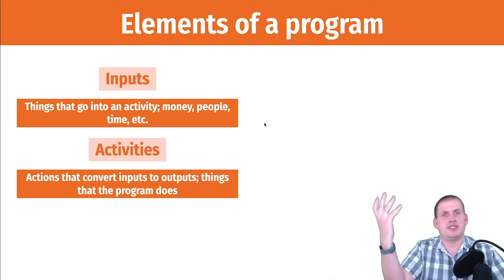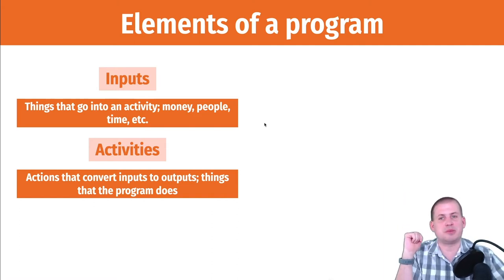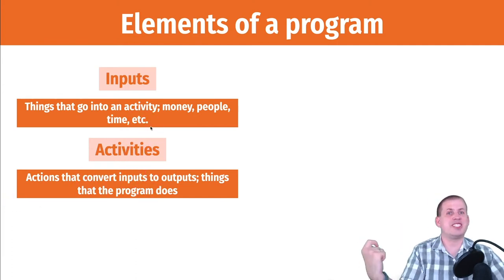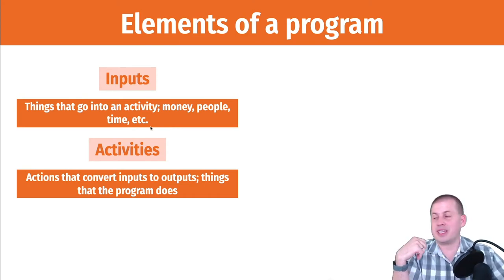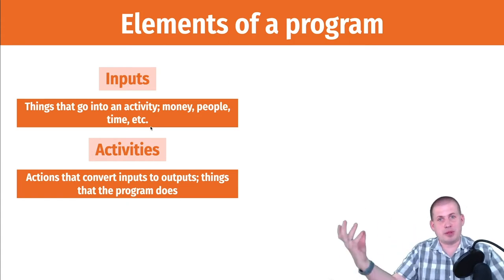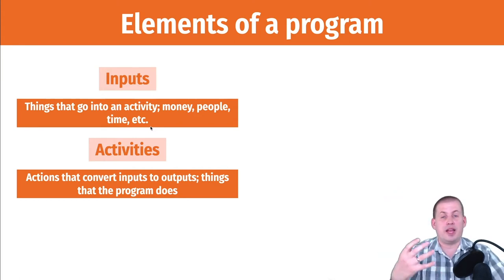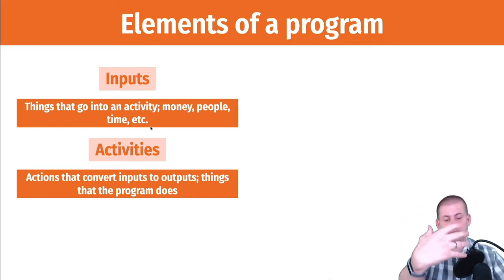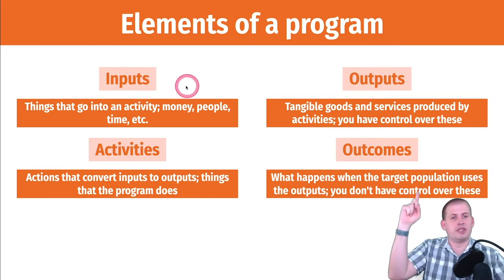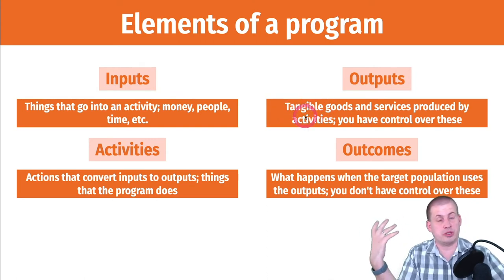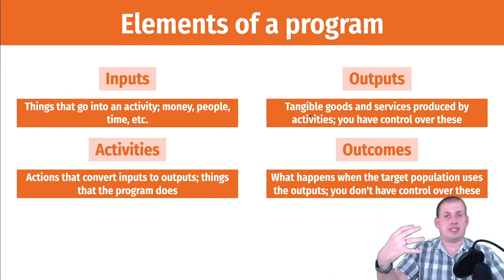Inputs are the things that feed into the program — the actual inputs that go into some sort of activity. An activity takes inputs and changes them into something. In the case of food stamps or SNAP, people apply: the input is the time spent applying, the actual application, the employee who works on it. The activity is processing the application, and that activity creates an output.